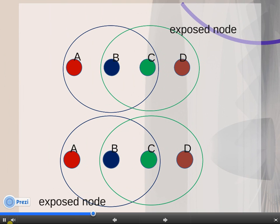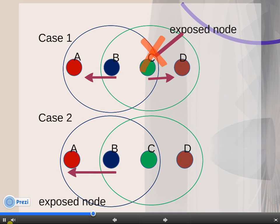Let's discuss some cases to understand our problem before reaching a solution. Case 1: There is communication going between B and A, and C wants to communicate to D at the same time. C senses that the medium is busy and will defer their transmission. Under this situation, C is the exposed node to the ongoing transmission from node B to A.